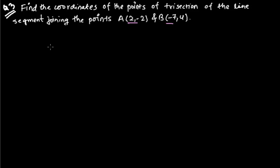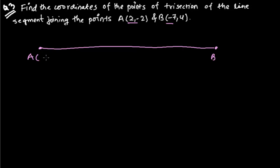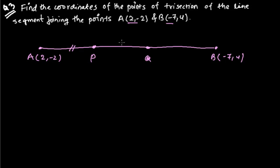Let me draw a rough diagram. Suppose this is our line — this is point A and this is point B. Its coordinate is 2 comma minus 2, and B is negative 7 comma 4. So here are two such points; suppose this is P and this is Q. This P and Q point is dividing the whole line into three equal sections — that is, AP equals PQ equals QB. So we need to find the coordinates of P and Q.